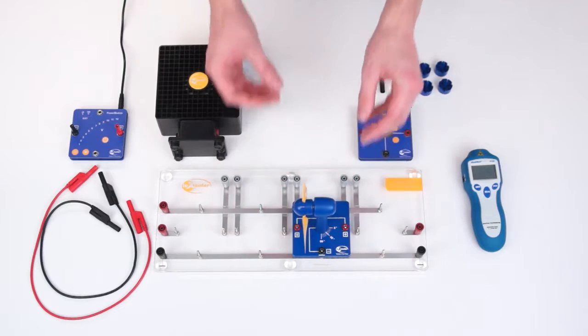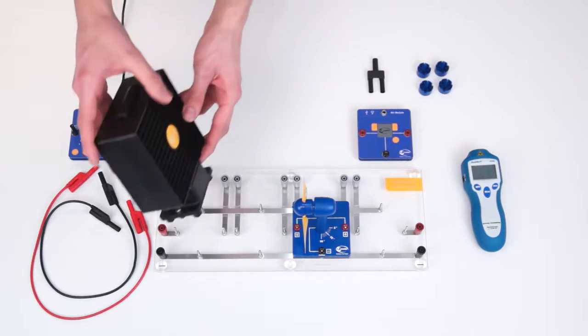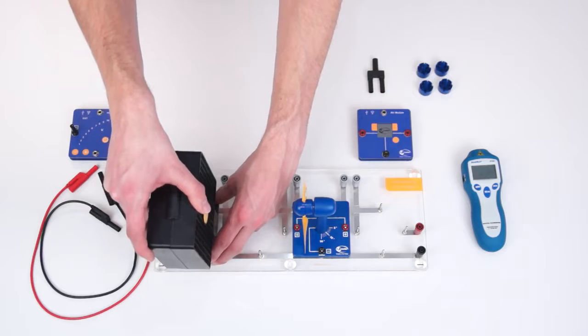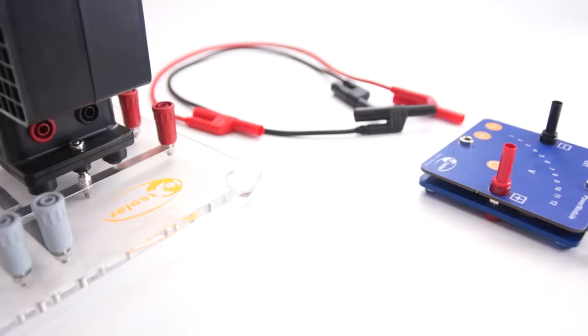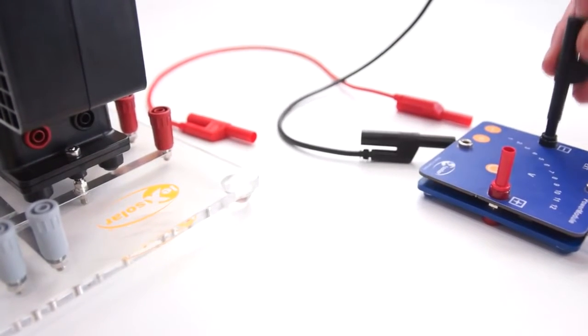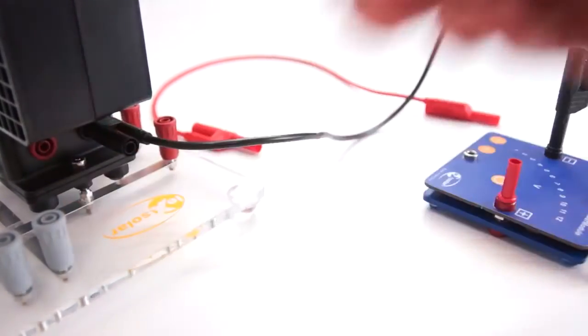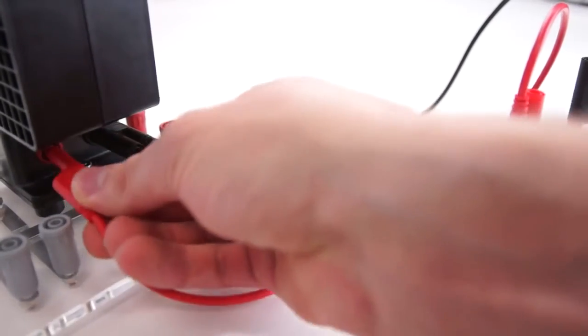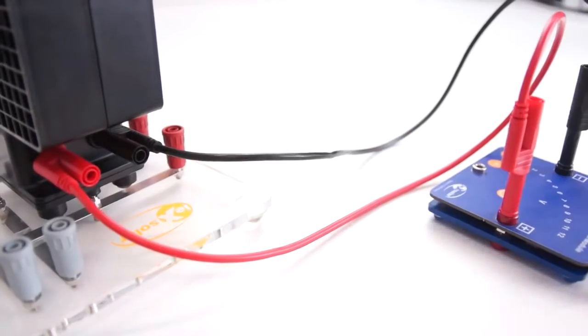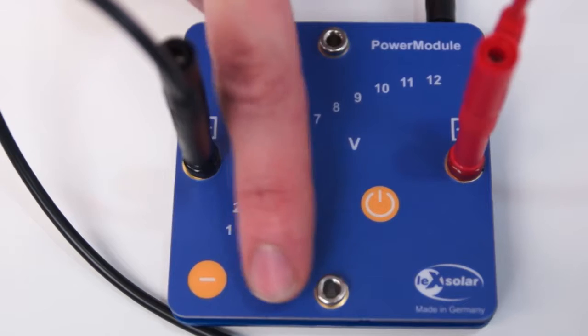To provide controlled wind conditions for the experiment we use the wind machine. We put this on the base unit first. We can supply the wind machine with power via the power module. When connecting the power module it is important to pay attention to the polarity otherwise the wind machine won't function. The wind speed can now be determined by the voltage at the power module. For our experiment we are using a voltage of 12 volts.